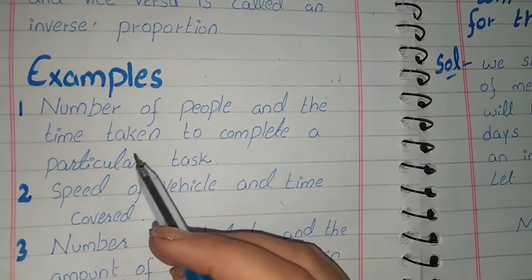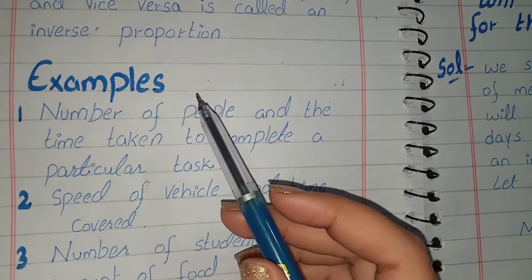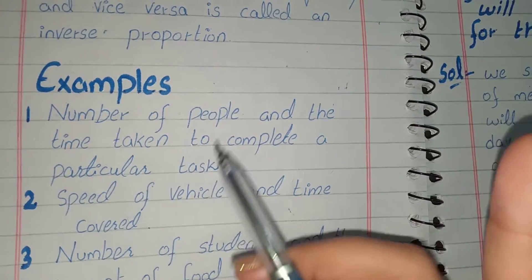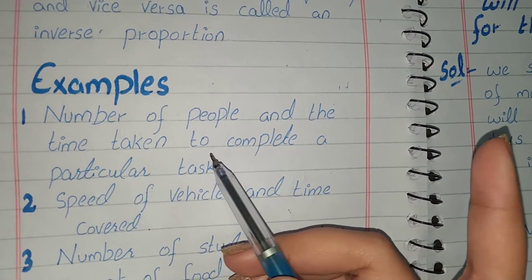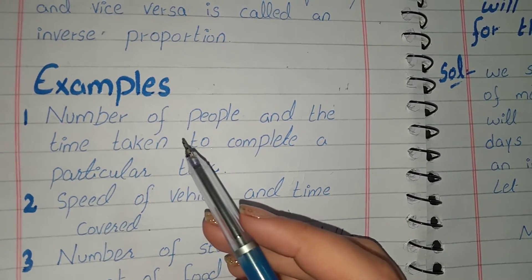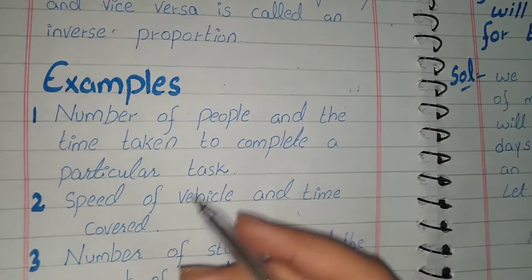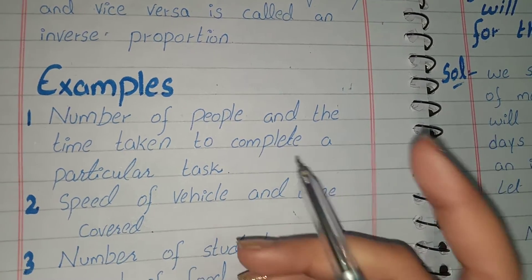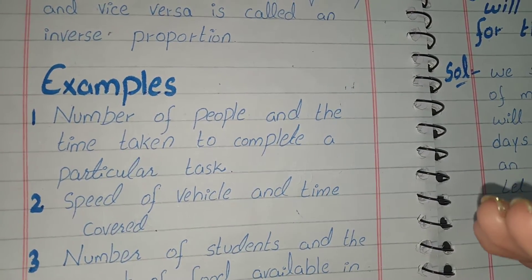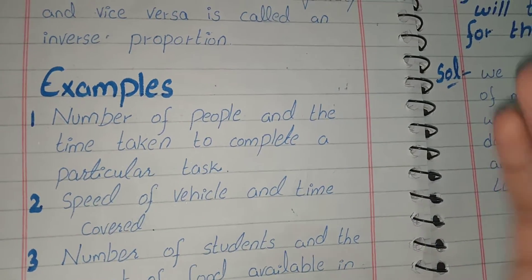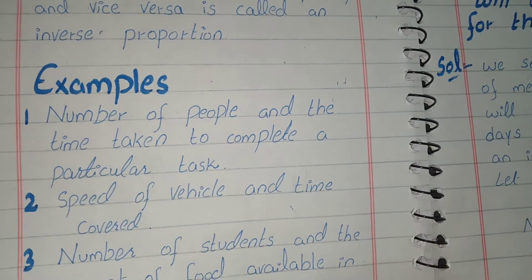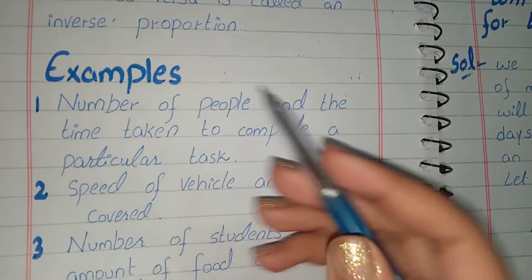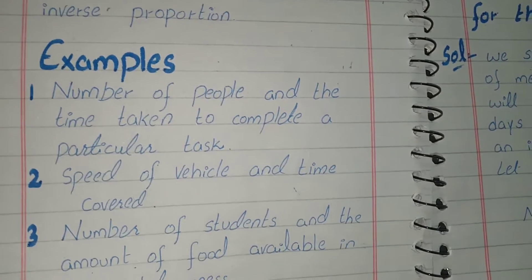For example, the number of people and the time taken to complete a particular task. If five people complete a task in five hours, and the number of people increases, they will finish more quickly. So if we increase the number of people, the time decreases. This gives us a relation of inverse proportion.